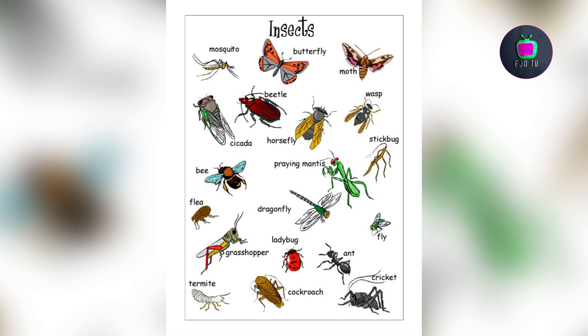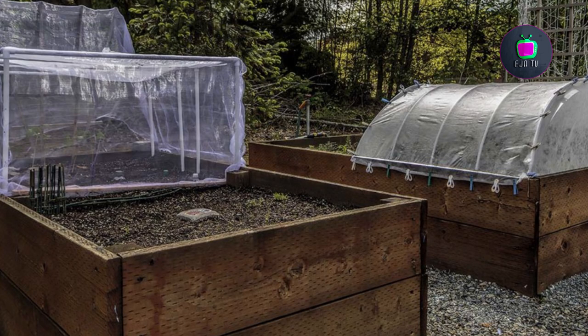Sasa, tueleze the advantages of insects. Kwanza ni the use in biological control - kudhibiti misho kama kipwamba. For example...